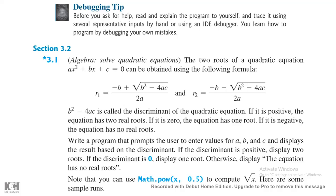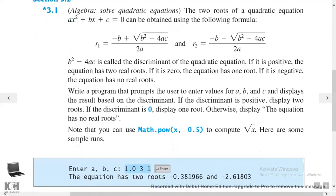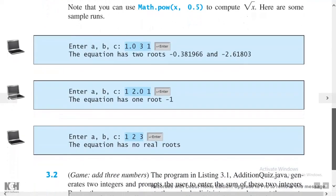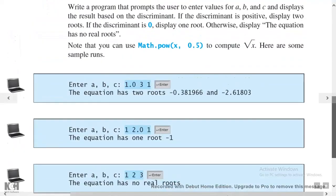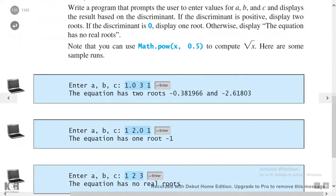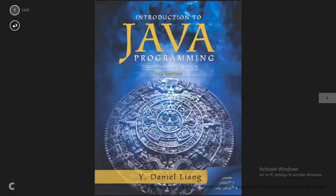If the discriminant is positive, display two roots. If the discriminant is zero, display one root. Otherwise, display that the equation has no roots. Note that you can use the method Math.pow(x, 0.5) to compute the square root of x. Here are some sample runs. This is the textbook we're using — you can search it online to get your own copy.